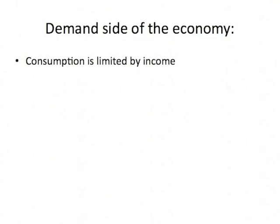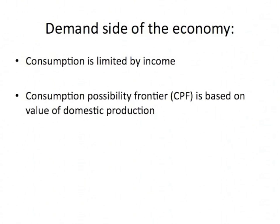Now, let's take a look at the demand side of the economy. The PPF looked only at the supply side. Now we're going to be taking a look at the limits of consumption, and consumption is going to be limited by the total amount of income — the value of the production that the economy produces. So the consumption possibility frontier is going to be based on the value of domestically produced goods.